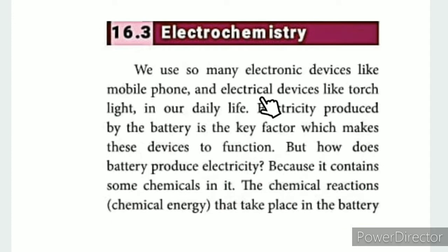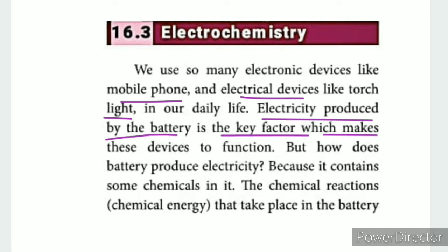We use many electronic devices like mobile phones, electrical devices like torch lights, remotes, toys, and batteries. This is the battery. Electricity produced by the battery is the key factor which makes these devices function. So the battery produces current through a chemical reaction.